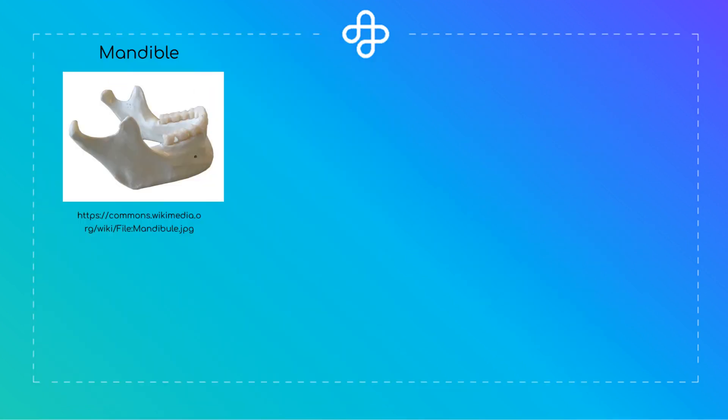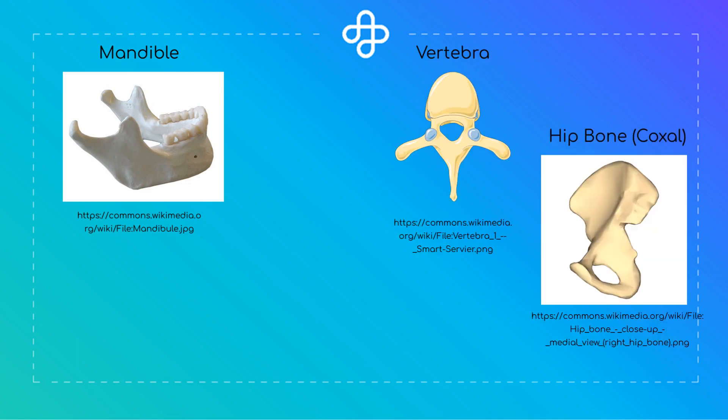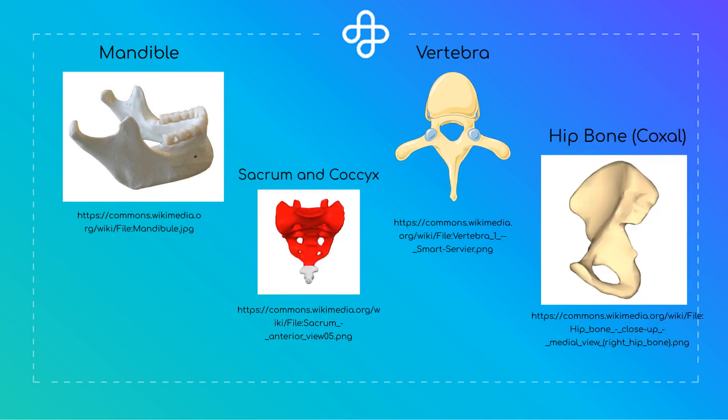The mandible, or lower jaw bone, is an example of an irregular bone. Irregular bones have an irregular shape. Other irregular bones are the vertebrae, hip bones or coxal bones, sacrum, and coccyx.